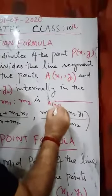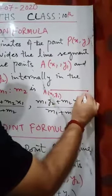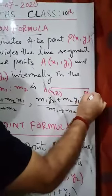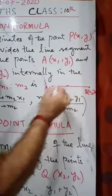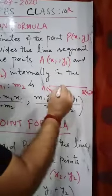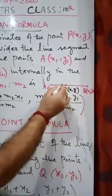...with coordinates x1, y1 and another point with coordinates x2, y2. Here is a point on the line segment, suppose P(x,y)...